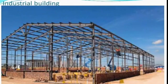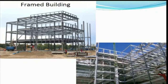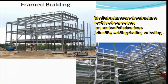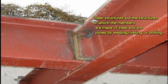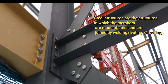Hello friends, in this video we will discuss about steel structures, its advantages and disadvantages. So let us begin from a simple definition of steel structure. Steel structures are structures in which the members are made of steel and are joined by welding, riveting or bolting.